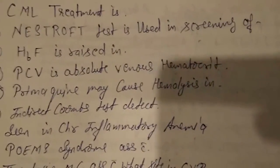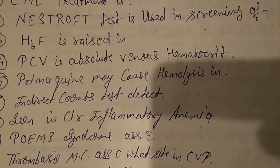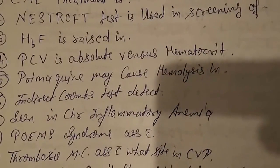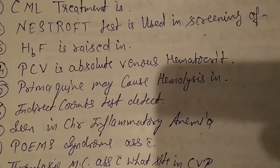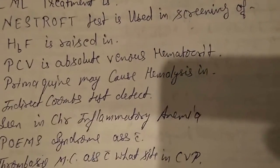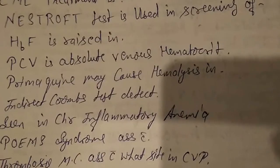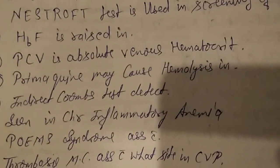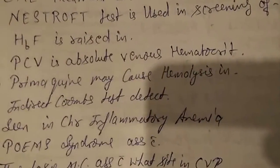Third question: HbF — hemoglobin F — is raised in juvenile CML, that is juvenile chronic myeloid leukemia. Fourth question: PCV — we first have to know that PCV stands for polycythemia vera.